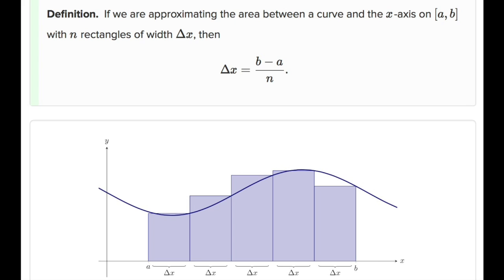Depending on the number of rectangles you wanted, you would have to find the delta x. So suppose we're approximating the area between a curve and the x-axis from a to b with n number of rectangles with the width delta x, then delta x equals b minus a over n.